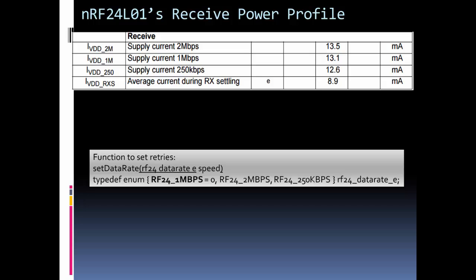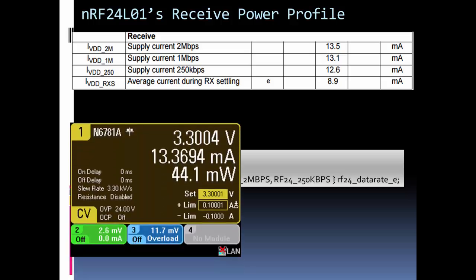If your data rate doesn't matter and you're concerned about power draw, go with the lowest data rate. Here's a reason why, because whenever you hit that start listening, which is the function that puts a module in receive mode, it's always drawing this amount of current, depending of course on the setting, but it never shuts off. It's not like transmit where there's just a pulse. This is constantly on.